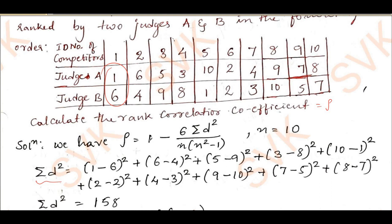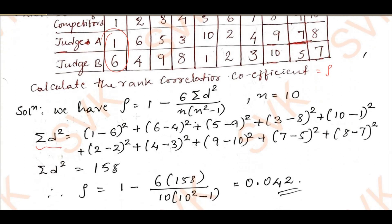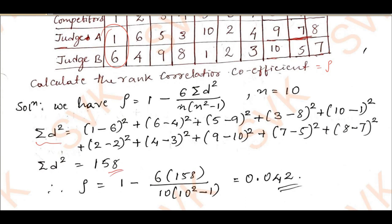Directly finding summation of d²: (1−6)² + (6−4)² + (5−9)² + (3−8)² and so on, up to (8−7)². Taking the summation gives 158. Substituting this value: rho = 1 − (6 × 158) / (10 × (100 − 1)), which simplifies to rho = 0.042 as the required rank correlation coefficient.